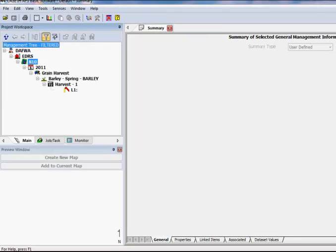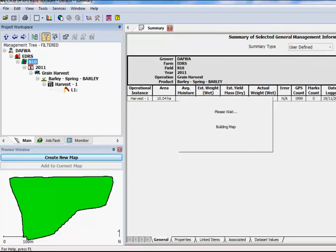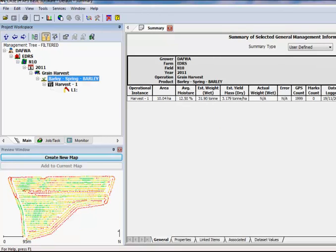Firstly, you'll need some form of precision agriculture or GIS software to display and interrogate your yield data captured by the harvester.